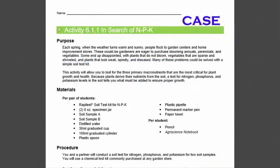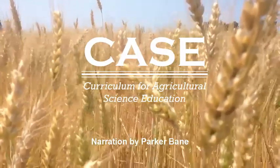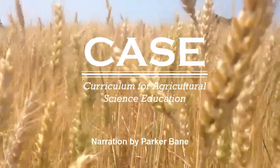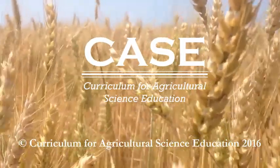Through activity 6.1.1, In Search of N, P, and K, you will perform soil tests to detect the levels of nitrogen, phosphorus, and potassium in order to understand that plants obtain required nutrients from the soil. Your teacher will provide instructions for the soil testing lab activity.